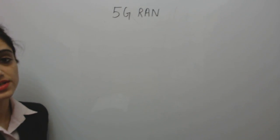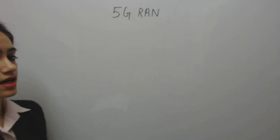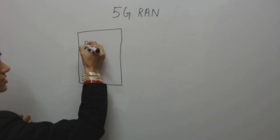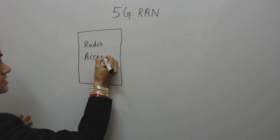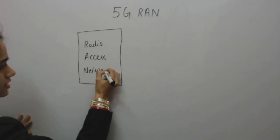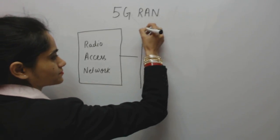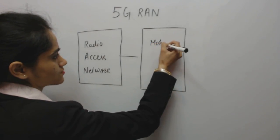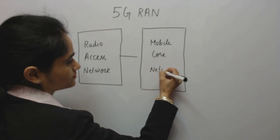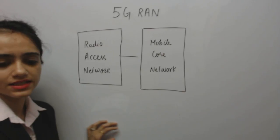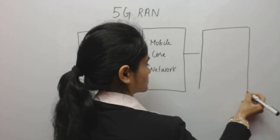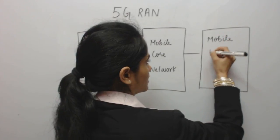Today in our class we are going to discuss about 5G radio access network and its architecture. Each architecture is divided into some basic entities. The very first entity is the Radio Access Network, which is connected to the Mobile Core Network. The Mobile Core Network is further connected to the Mobile Network Operation System.